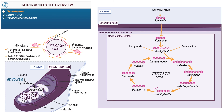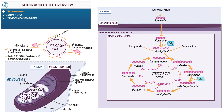We can remember these intermediates in the order they appear using a simple mnemonic. Now let's add the energy and waste products of the cycle, starting with the waste: carbon dioxide. Carbon dioxide is released whenever an intermediate loses a carbon molecule. 3-carbon pyruvate forms 2-carbon acetyl-CoA; 6-carbon isocitrate forms 5-carbon alpha-ketoglutarate; 5-carbon alpha-ketoglutarate forms 4-carbon succinyl-CoA. The cycle also produces water, but we won't draw that here.